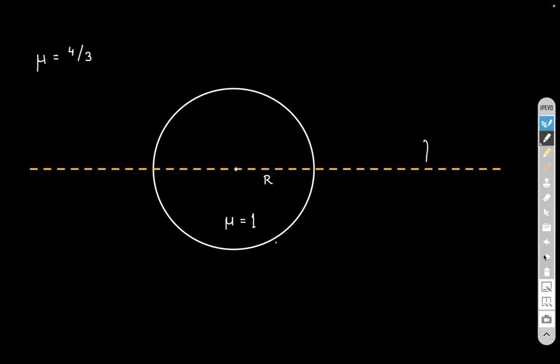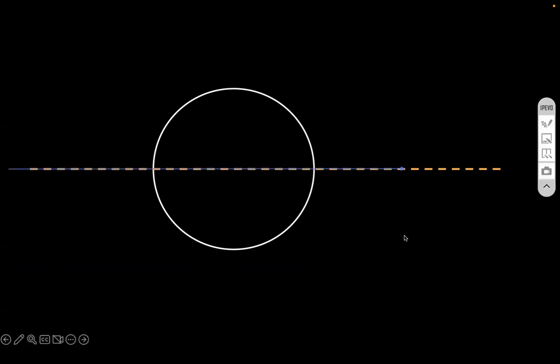So the ray diagram would look something like this. This ray, which will be along the dotted line will straight away go because it is along the normal. Another ray we have to take because we have to find intersection. Now this ray, when it hits the first interface, which is between the water and the bubble, what will happen to it? It will bend away from the normal, because it is traveling from a denser medium to a rare medium. So this is what will happen.